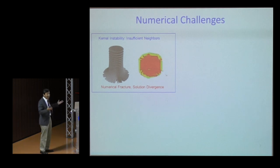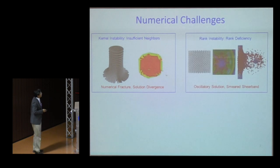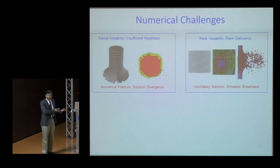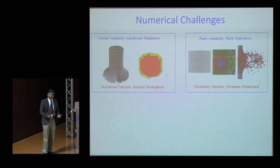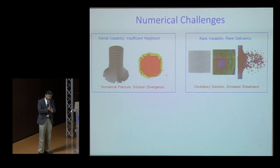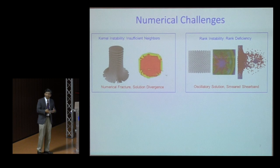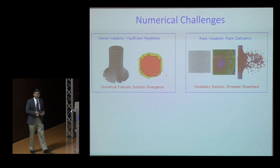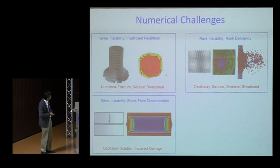How do we address this under very large-scale deformation? The second instability is rank instability. Nodal integration leads to rank deficiency, which causes very smeared shear bands instead of clear ones, leading to very inaccurate physics.